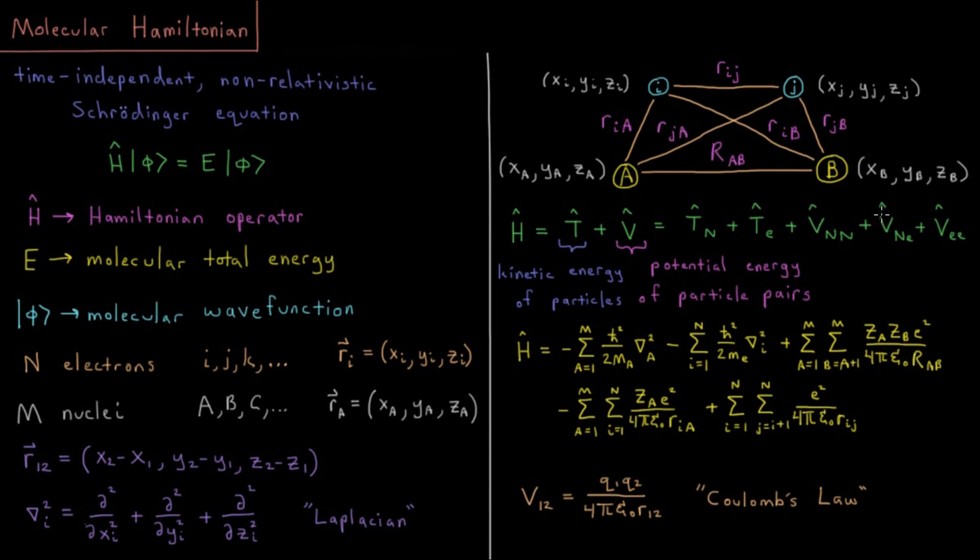We move on to nuclear-electron attraction with a negative sign because that's an attraction, a decrease in potential energy. Sum over all nuclei A=1 to M, sum over all electrons i=1 to N. In this diagram both would be two, giving us those four interactions. That's Zₐ·e²/(4πε₀·rₐᵢ), distance from the nucleus to each electron. Here A is just an index, like nucleus one, nucleus two.